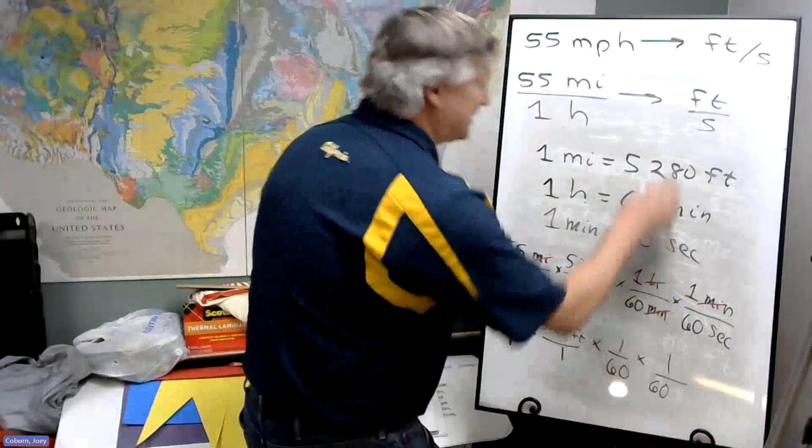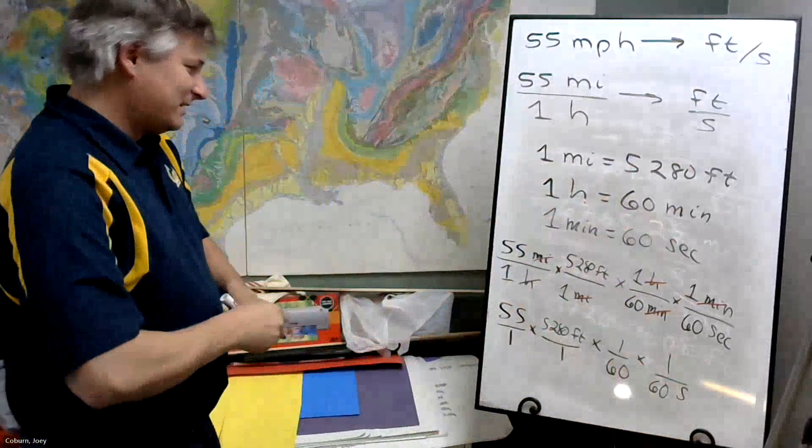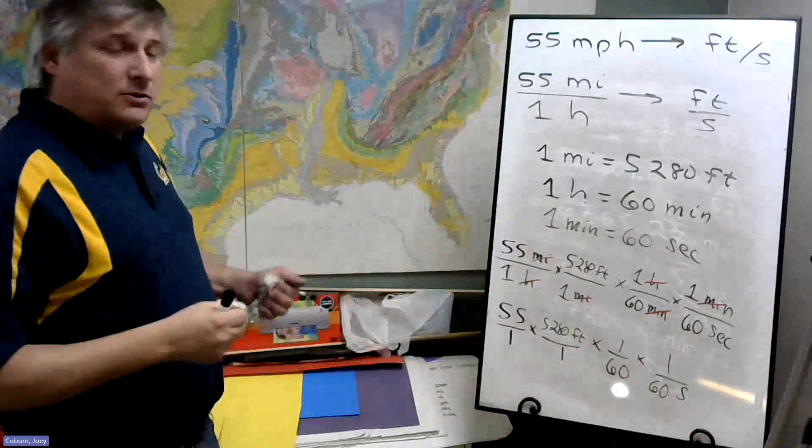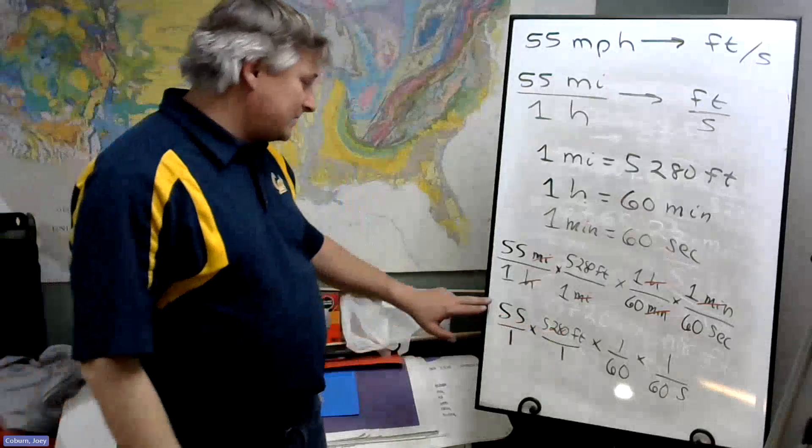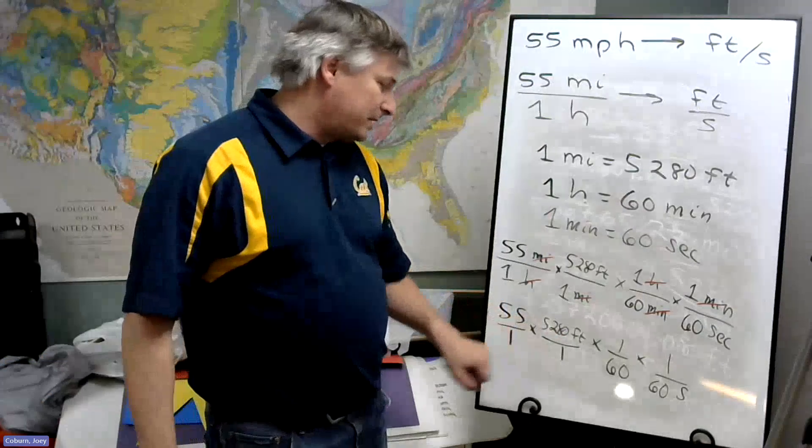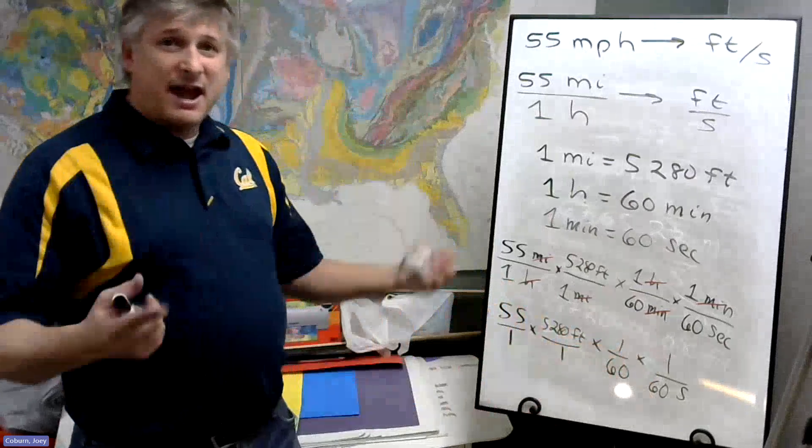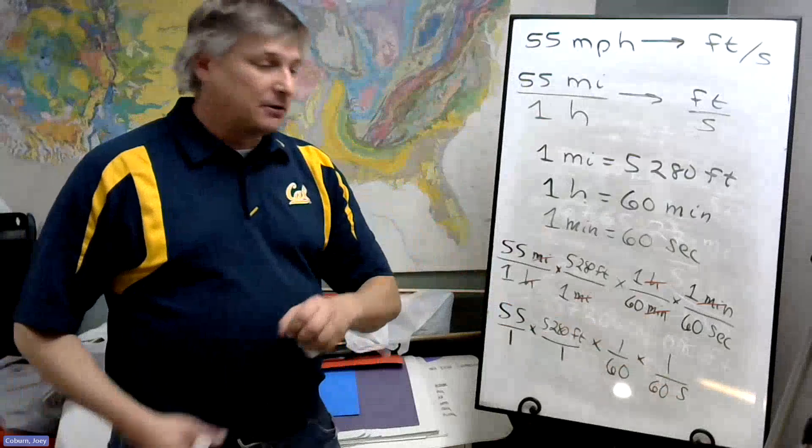And then 1 over 60 seconds. Or I could just use S like I'm using here. And that's an S for seconds, not a 5. So what we can do is this: we can multiply by these fractions. 55 over 1 times 5,280 over 1 times 1 over 60 times 1 over 60. And then tack on feet on top of seconds at the very end.